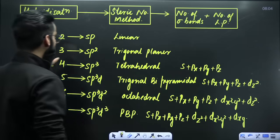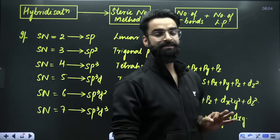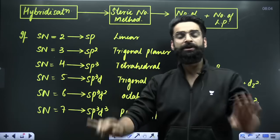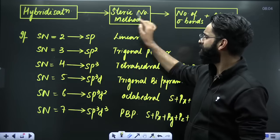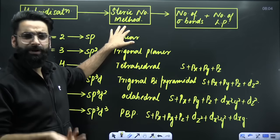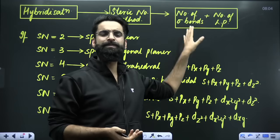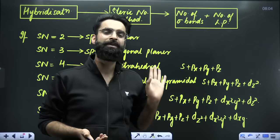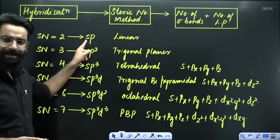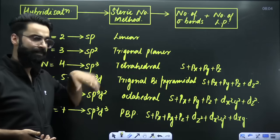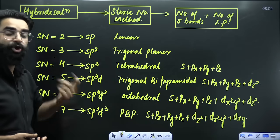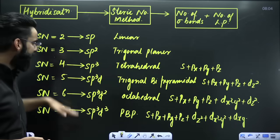Point number 2: many frequently asked questions are related to hybridization and geometry. In order to calculate hybridization, we use one simple method called the steric number method. Steric number is defined as the number of sigma bonds plus the number of lone pairs. If the steric number is 2, hybridization is sp and geometry is linear. If the steric number is 3, hybridization is sp2 and geometry predicted is trigonal planar.